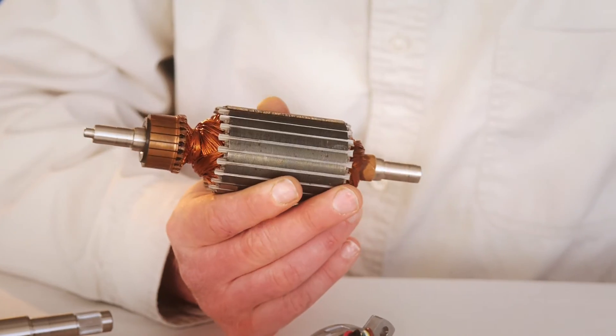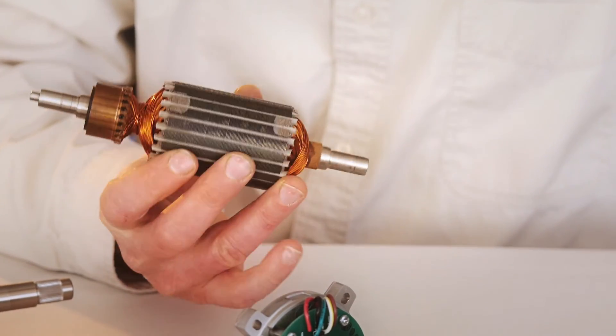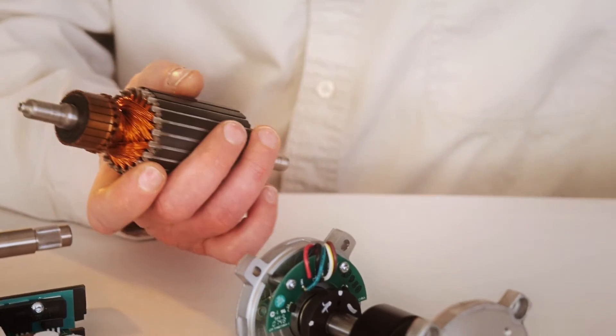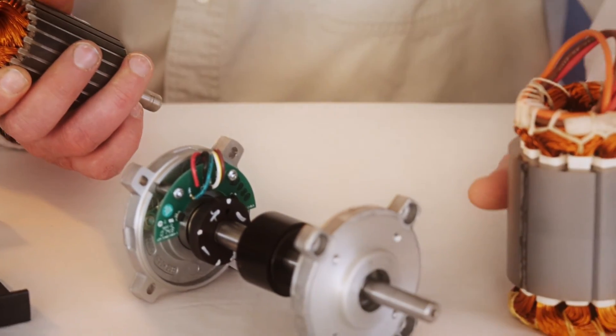The brush type motor uses brushes in order to commutate the coils. The brushes are normally the first thing to wear out, which can happen between 2,000 and 3,000 hours of life. This is much less than the 20,000 hours of the BLDC.